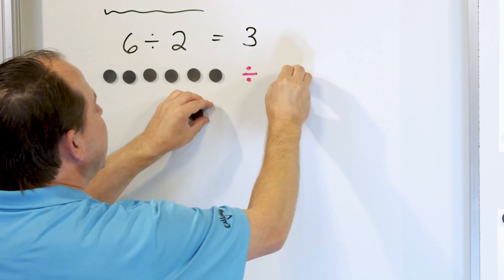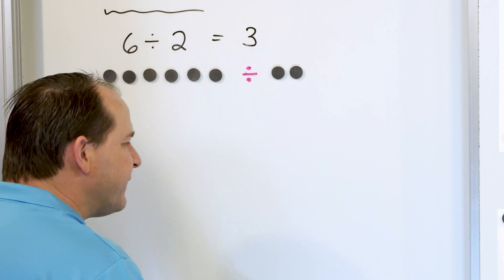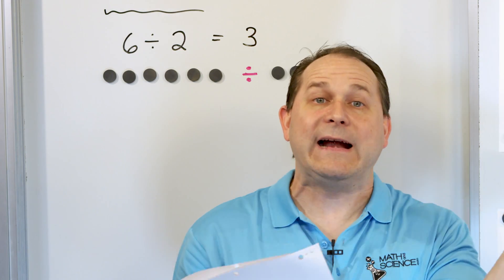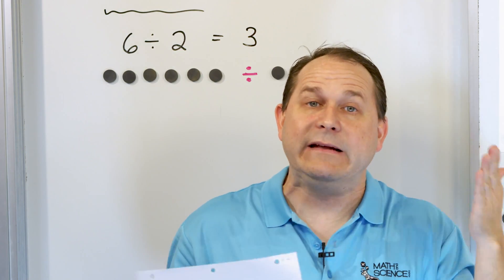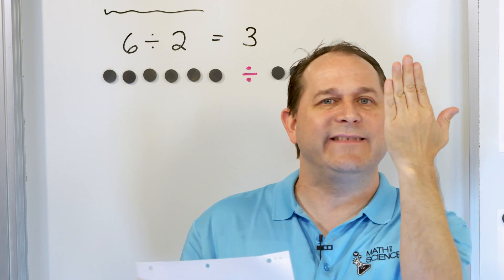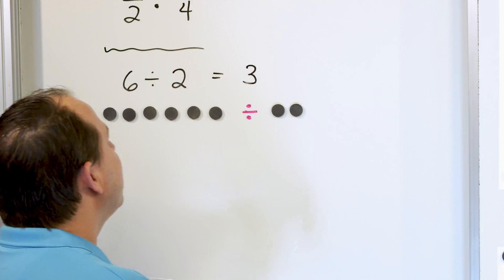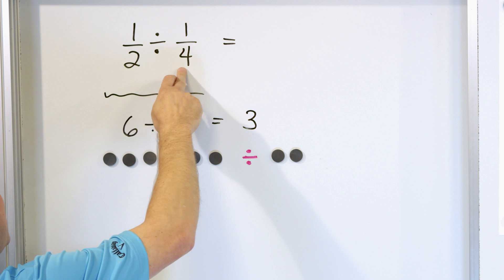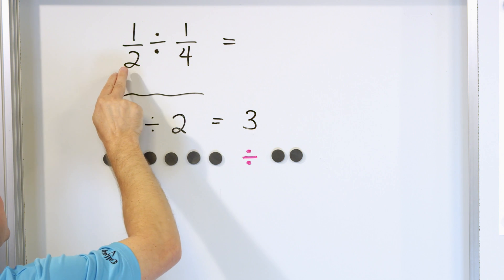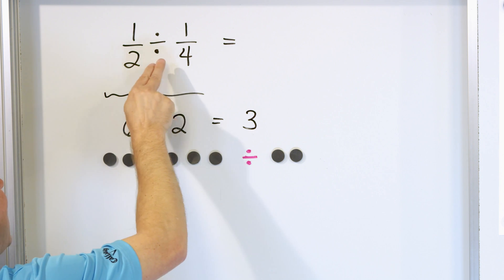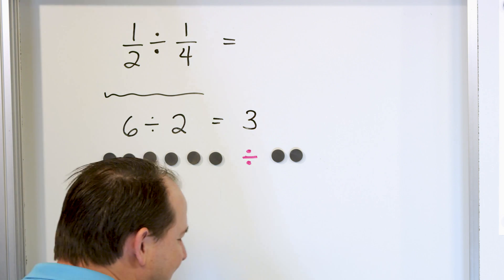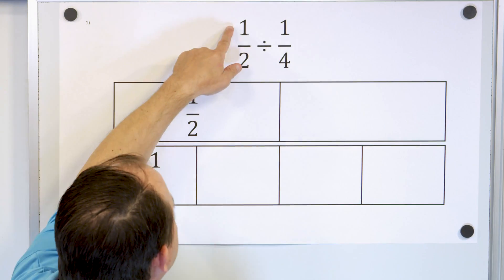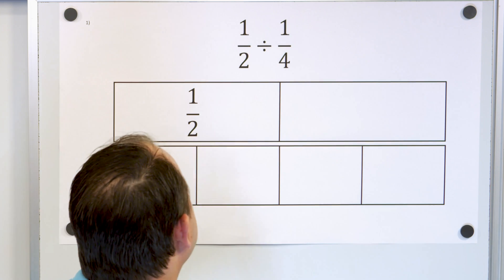It's helpful in division problems to think of it as: we're starting with an amount and dividing by another amount — how many times can that second thing fit in? So we're going to take 1 half and divide by 1 fourth and do the same thing. We just need to represent 1 half and 1 fourth to figure out the answer.